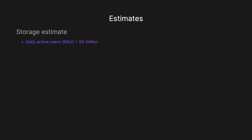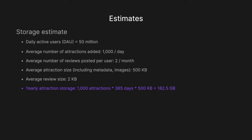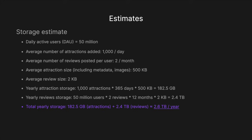For high-level storage estimates: let's say we have 50 million daily active users, roughly 1,000 attractions added every day, and an average of two reviews per user per month. The average attraction size including metadata and images is roughly 5,000 kilobytes, and the average review size is around 2 kilobytes. Yearly attraction storage comes to roughly 182.5 GB, yearly review storage roughly 2.4 TB, giving a total of roughly 2.6 TB per year.